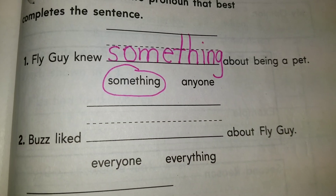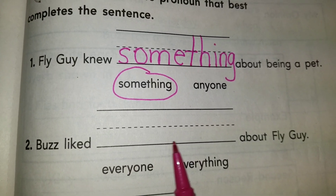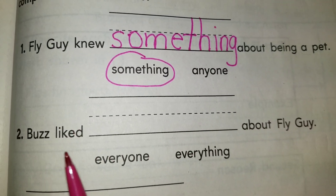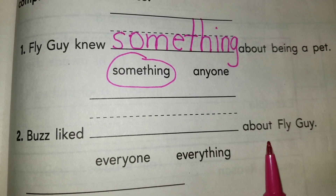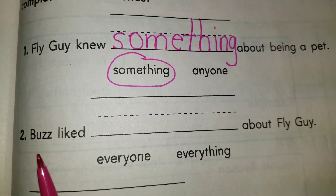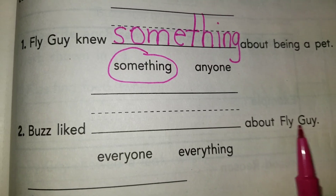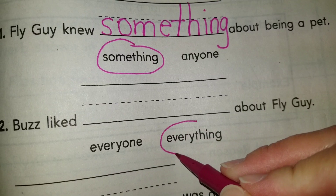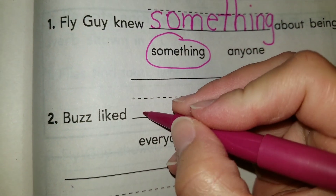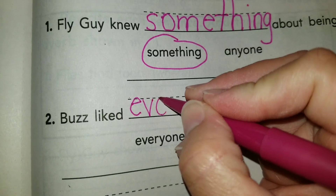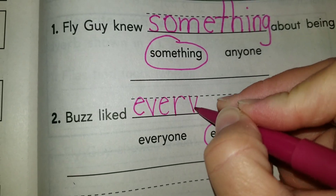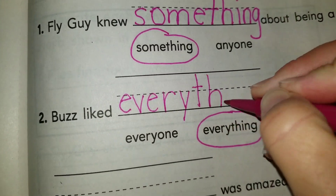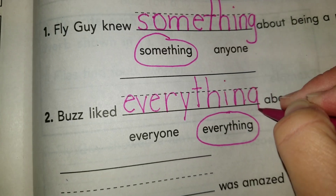Let's go ahead and read number two: 'Buzz liked blank about Fly Guy.' 'Buzz liked everyone about Fly Guy' or 'Buzz liked everything about Fly Guy.' The right one would be 'everything.' It's funny because there's one part I don't like about Fly Guy — when it's time to eat, he always eats from the trash. Everything is also a compound word.